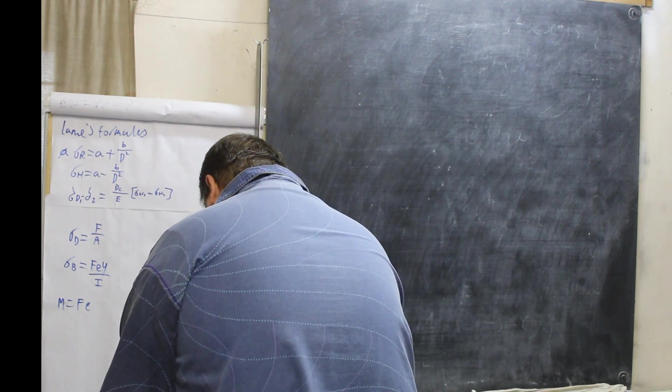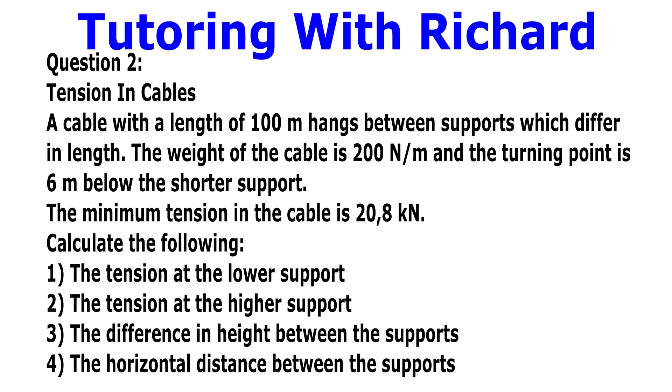Our first question. A cable with a length of 100 meters hangs between two supports, which differ in length. The weight of the cable is 200 N per meter. And the turning point is 6 meters below the shortest support. The minimum tension in the cable is 20.8 kN. Calculate the following.